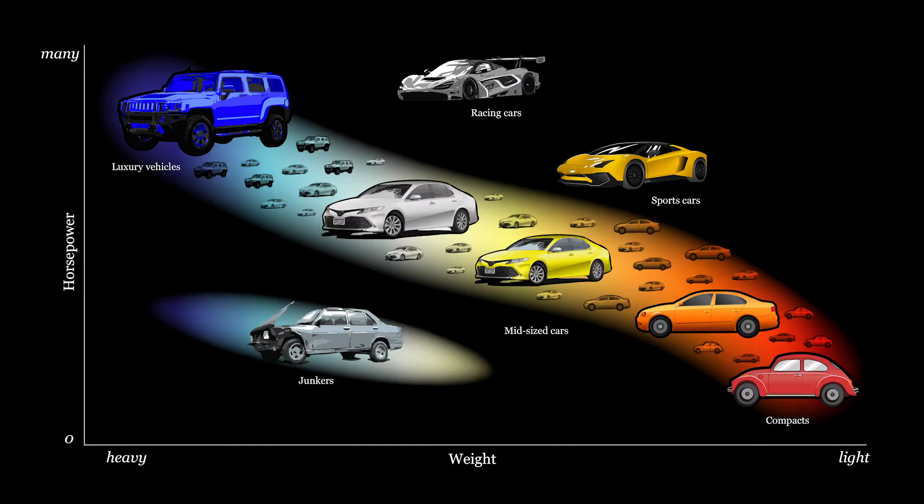This is memorably depicted in a fun graphic of the HR diagram for cars, where we have plotted the power output of cars on the y-axis increasing upward and weight on the x-axis increasing to the left. Most stars fall along a main sequence where we get large powerful cars in the upper left and small efficient cars in the lower right, just like for stars.